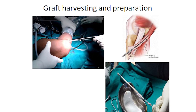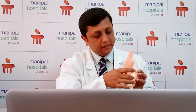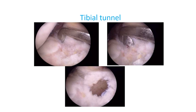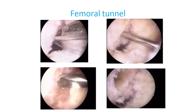After the graft is prepared, we make small tunnels in the tibia as well as in the femur so that we can pass the graft. Once the tunnels are made, we pass the graft into the knee joint along the direction of the anterior cruciate ligament — this is called anatomic fixation of the ACL graft.